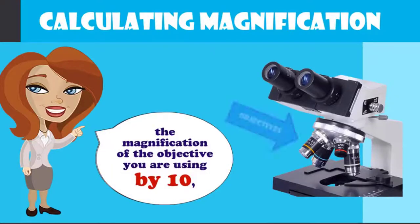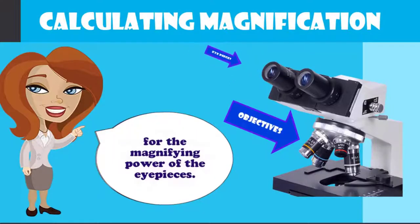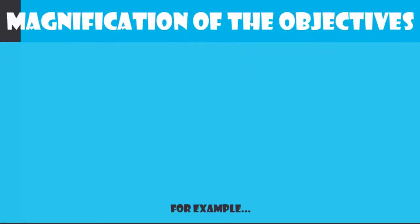In order to calculate the total magnification, you will need to multiply the magnification of the objective you are using by 10, for the magnification power of your eyepieces.